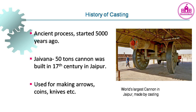Casting is an ancient process, started 5,000 years ago. A 50-ton cannon was built in the 17th century in Jaipur. Casting was used for making arrows, coins, knives, and similar items. The world's largest cannon in Jaipur was made by casting.